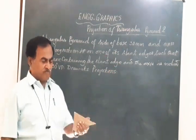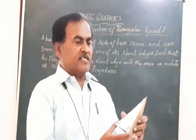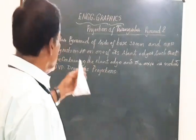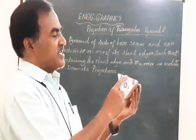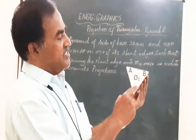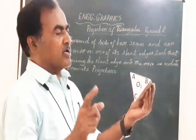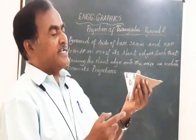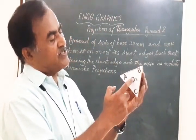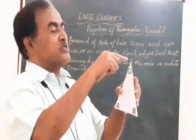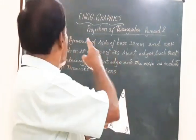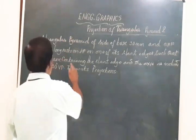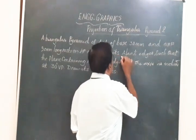This is a triangular pyramid considered for today's projection. The size of the base is 30 mm — that means AB, BC, and CA all have equal measurements of 30 mm. The height of the solid is measured from the center of the base O1 to the vertex O, and this height is given as 50 mm. It has to rest on HP on one of its slant edges.